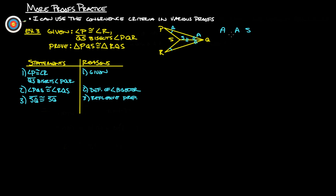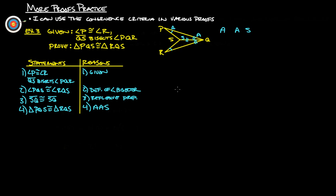Angle, angle, side is one of our valid congruence criteria. So we can prove that triangle PQS is congruent to triangle RQS by angle-angle-side. That's all there is for more proofs practice. If you have any further questions, please feel free to ask in class. Thanks.